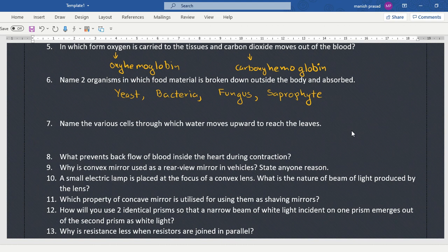Okay, now name the various cells to which water moves upward to reach the leaves. Root cells to root cells, from root cells to xylem, and xylem's all parts will come: xylem parenchyma, tracheids, vessels are a structure, fibers. Fibers, yes. Fibers are in phloem.